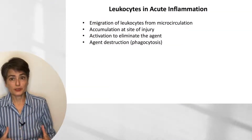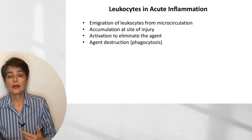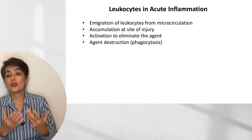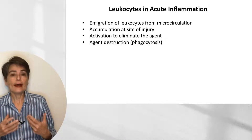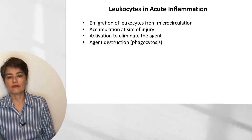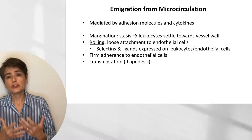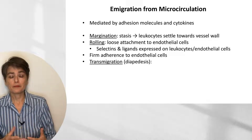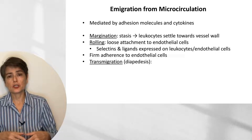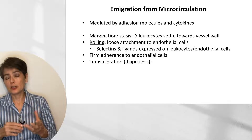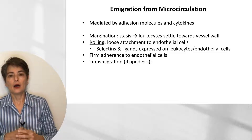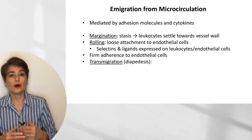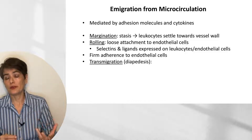Now let's talk about what leukocytes do, because this is a very complicated ballet. Leukocytes traveling in the blood need to get out of the blood, accumulate at wherever the injury is, activate to eliminate the agent, and then destroy the agent through phagocytosis. The first step is emigration from the microcirculation, which is mediated by adhesion molecules and cytokines.